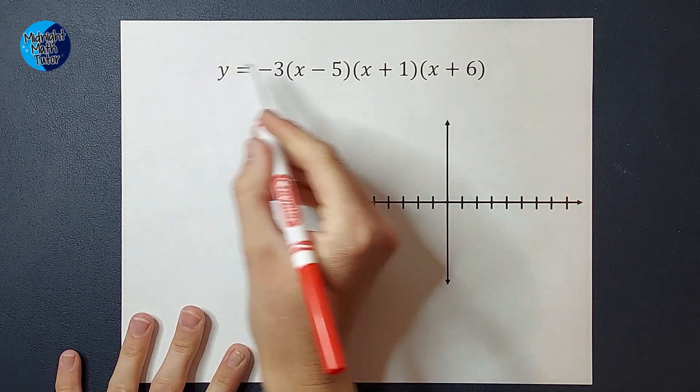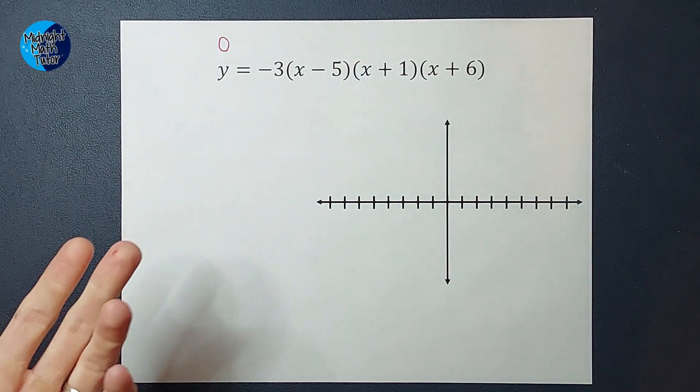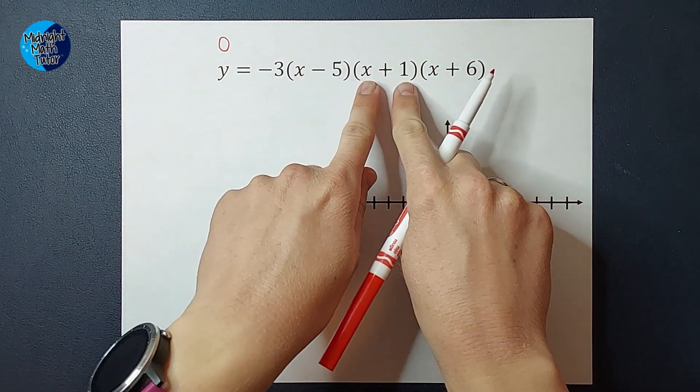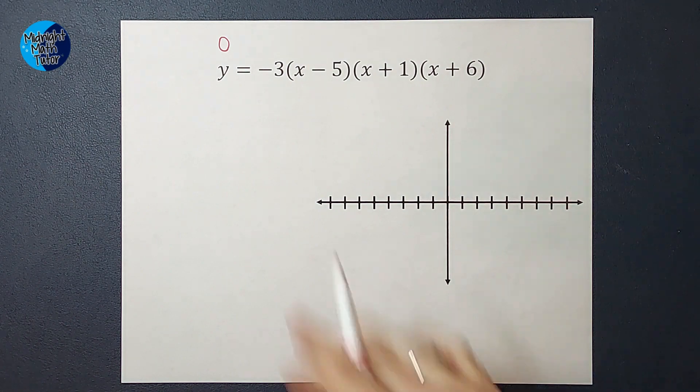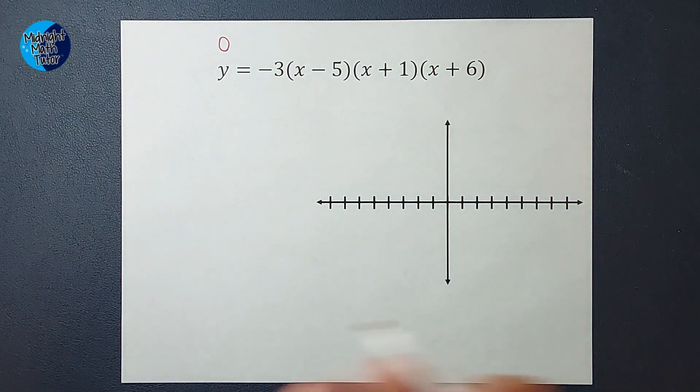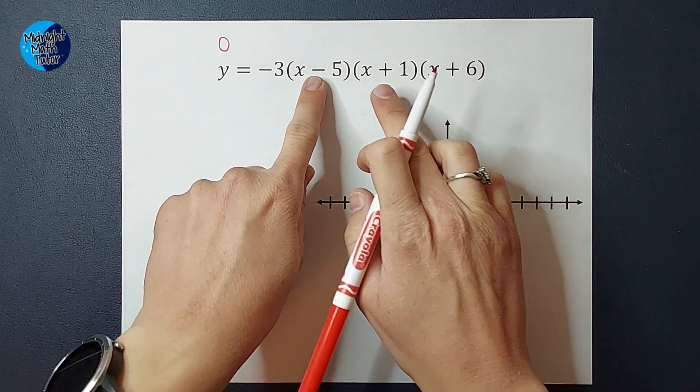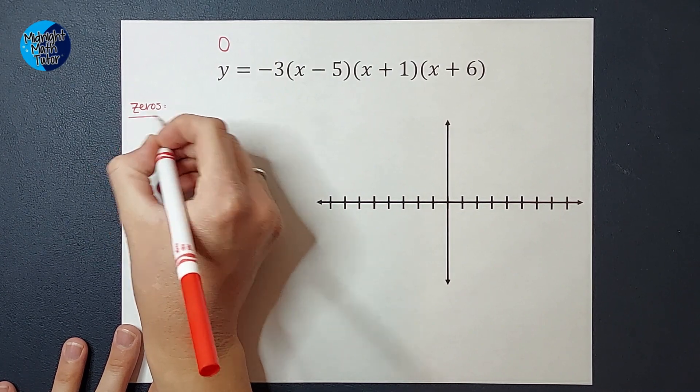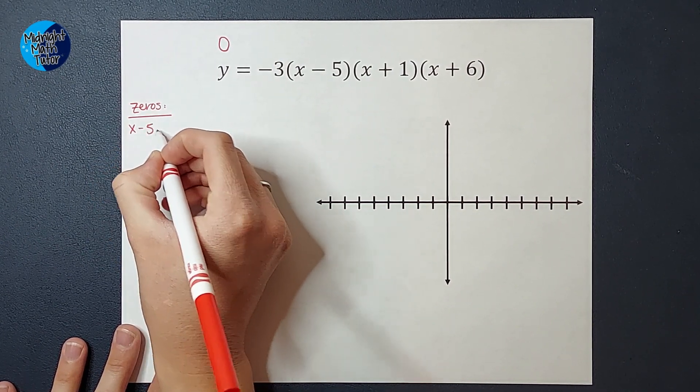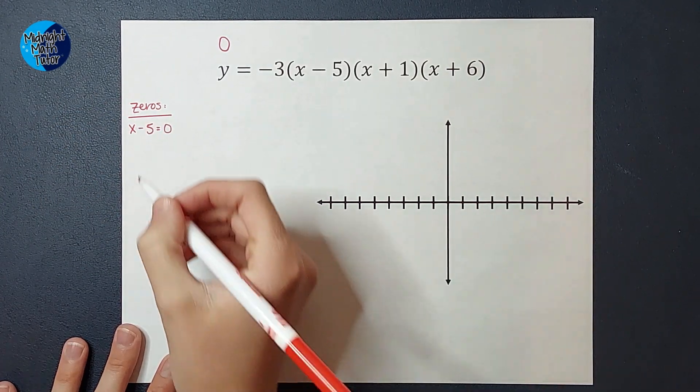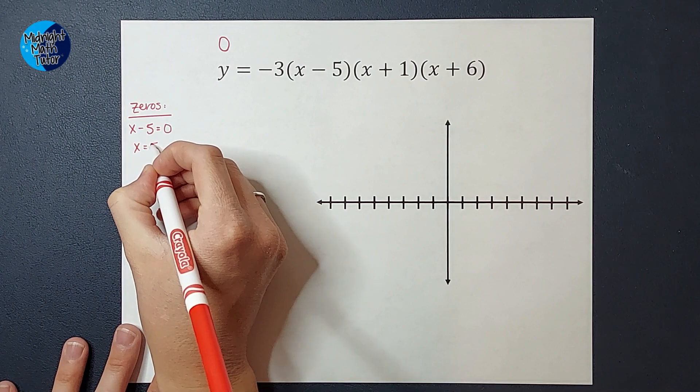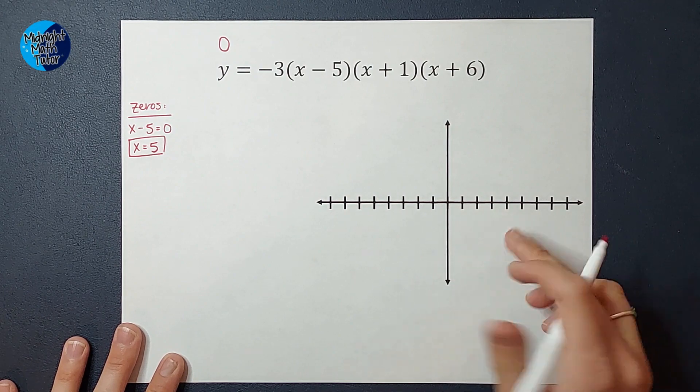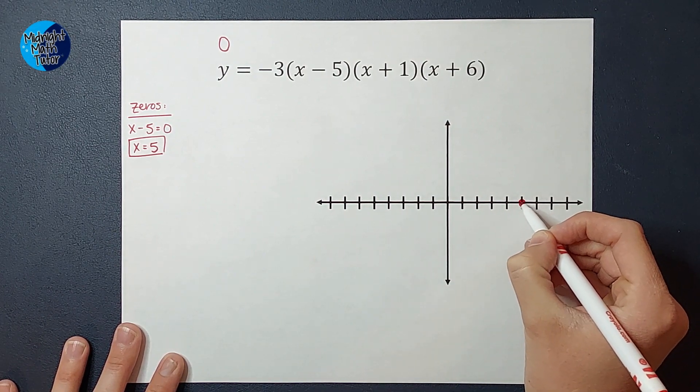So that would be me setting this whole thing equal to zero. When I have this whole thing set equal to zero, you end up setting each parenthesis equal to zero. We could set the negative three equal to zero, but that's not true. It doesn't really matter. So I'm going to set each of these equal to zero. So these are my zeros. I'm going to have x minus five equals zero. I add five to both sides and end up with x equals five. That is one of my zeros that I can go ahead and come put on my graph: one, two, three, four, five, right there. I know my graph crosses right there.